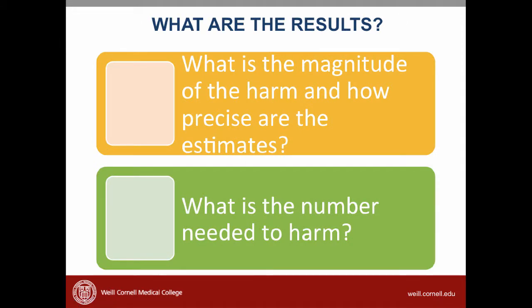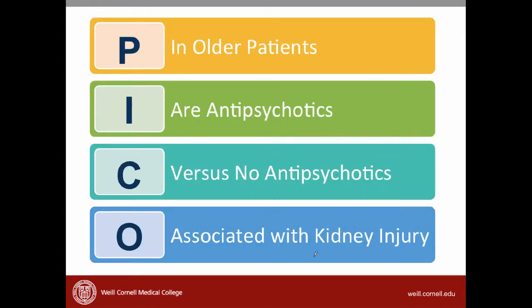There are two questions that we need to answer. First, what is the magnitude of the harm and how precise are the estimates? And second, what is the number needed to harm? Remember, we want to focus on kidney injury, and the researchers define that as hospitalizations within 90 days of taking the antipsychotic with evidence of kidney injury. Let's see if we can find this information back at the article.